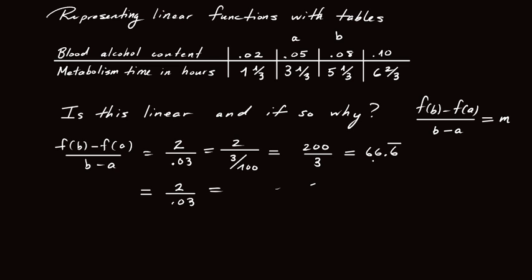So we get the same thing, right? We get 66.6 bar. So nothing changes if we choose a to be 0.05 and b to be 0.08.